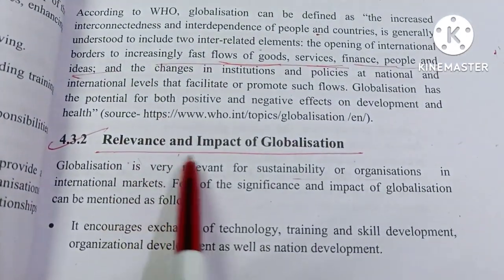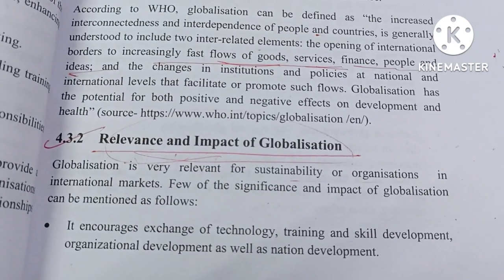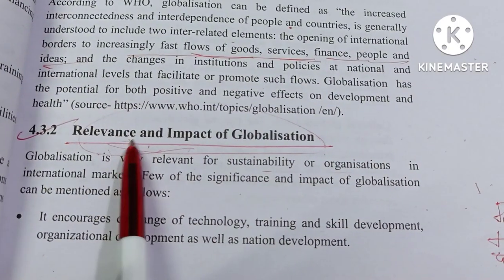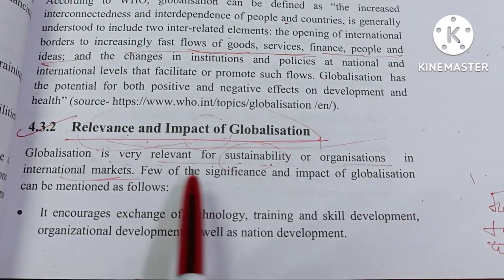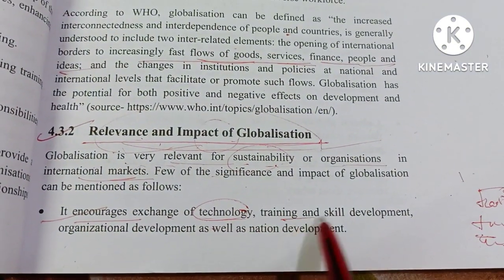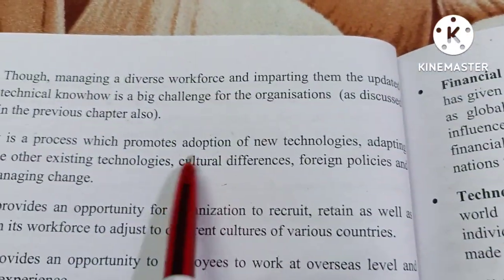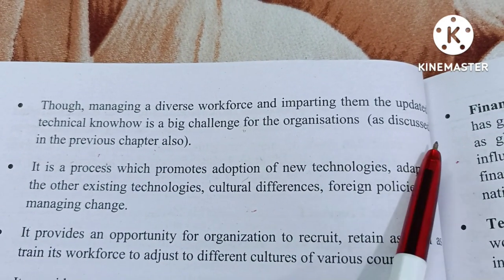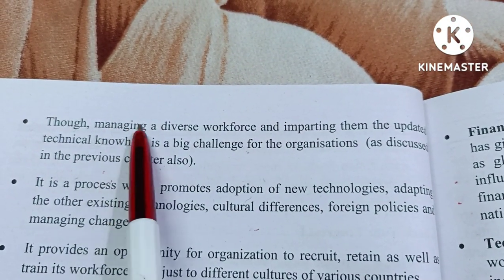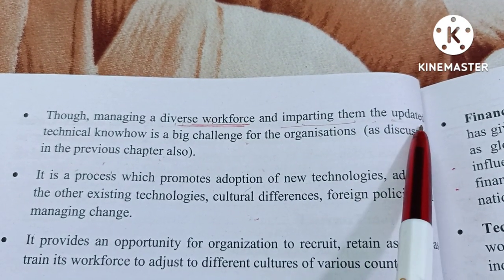Now we have the heading of relevance and impact of globalization. We maintain international relations, trade with other countries, receive tourists, and exchange food, culture, and practices. Globalization is very relevant for sustainability and for organizations in international markets. It encourages the exchange of technology, training, and skill development. For example, our country has exchanged technology with Russia, USA, Japan, and other countries — including weapons and nuclear missiles.